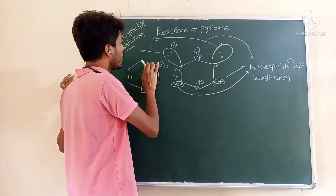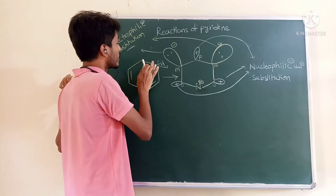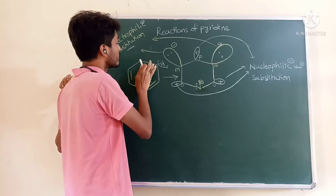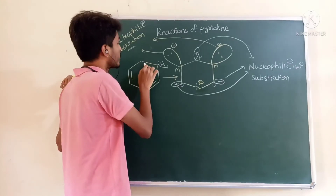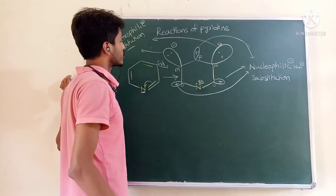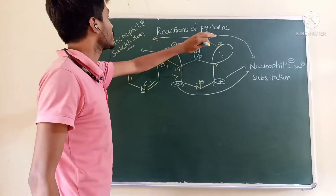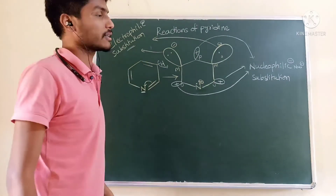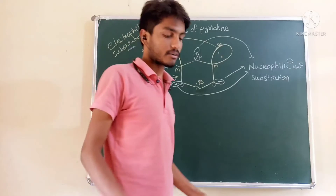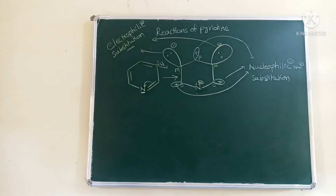There is no breaking of the pi bond. In order to preserve the aromaticity, pyridine undergoes substitution reaction — that is either nucleophilic or electrophilic substitution reaction. So this is about pyridine. Thank you.